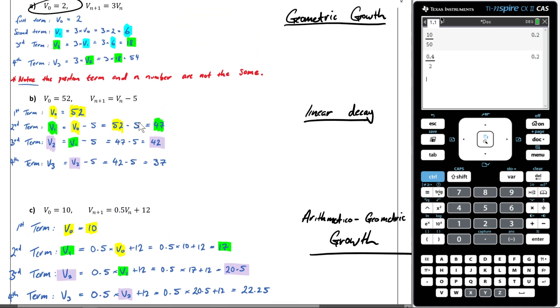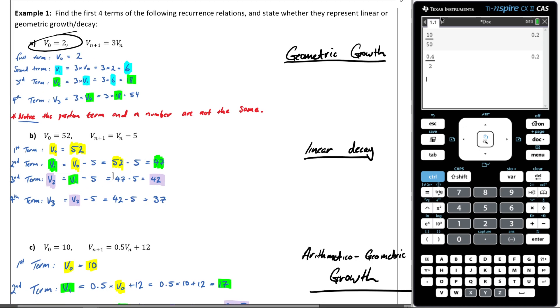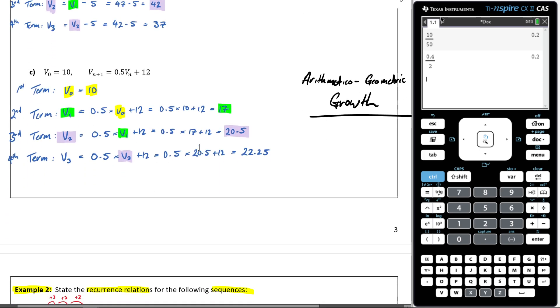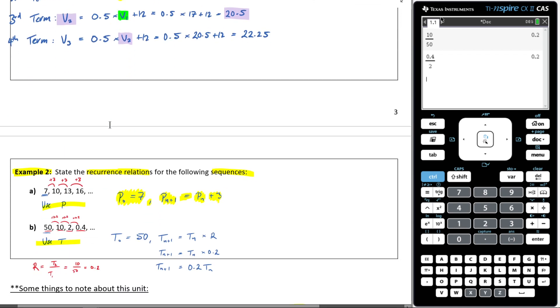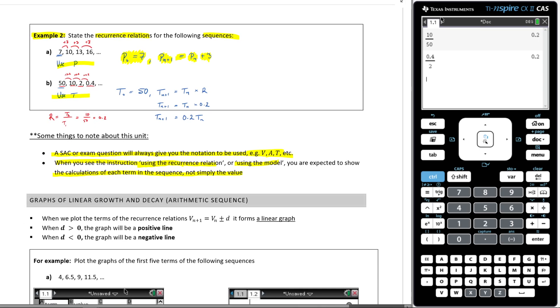What that second dot point is referring to is what we were doing up here. Do you see how when we were doing it by hand, we were showing each successive step. We weren't just listing the answers. We were using the recursion relation to show it. So it was all this working out. But that's what this is saying. When you see the instruction, use the recursion relation or using the model, you're expected to show the calculations of each term in the sequence, not simply the value. All right. Let's pause here. And then we'll go into the next.